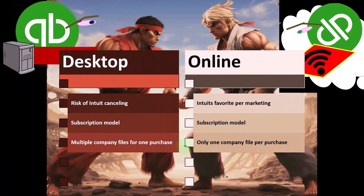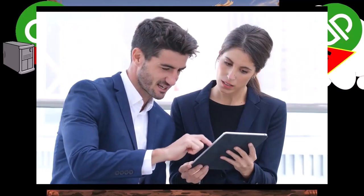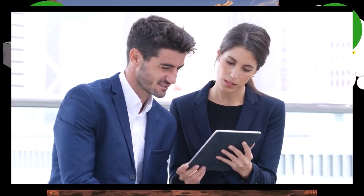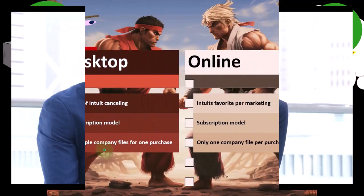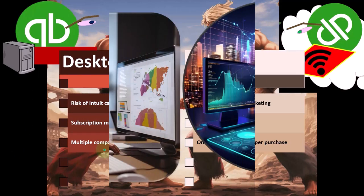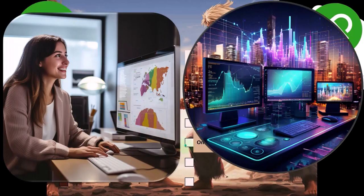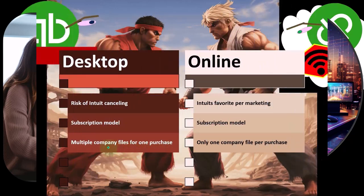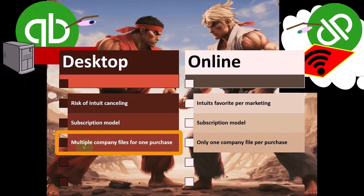You can see why Intuit would want everyone to purchase a new subscription per company file. That would likely be a point of tension with bookkeepers who have a business model that works with one software purchase, while Intuit wants everyone starting a new company file to pay for a separate subscription.